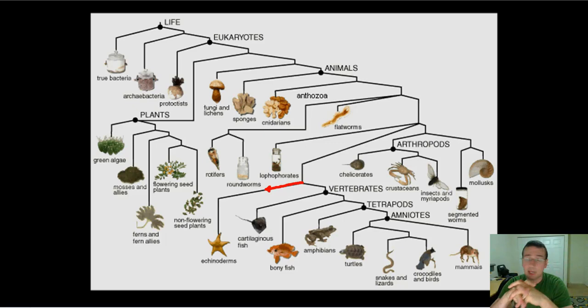Then from the ancient amniotes, which are kind of reptile, you also have the development of modern mammals, which is the most advanced group of animals. That is the tree of life that we completed now.